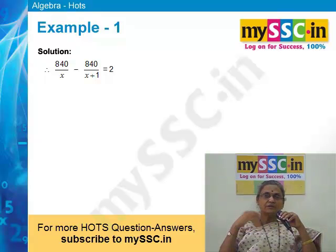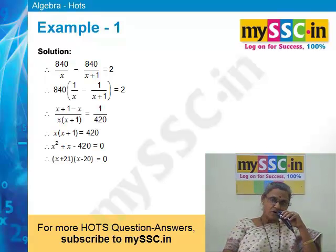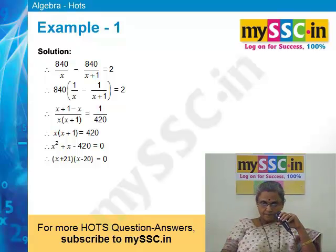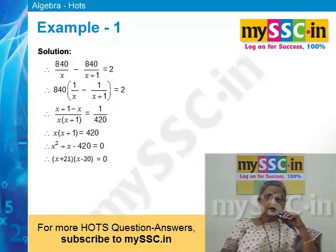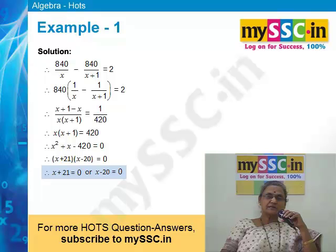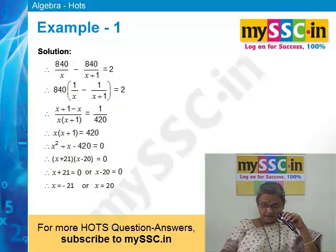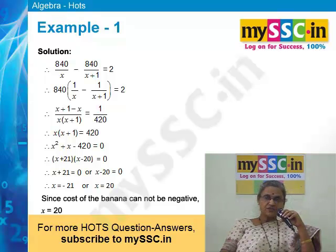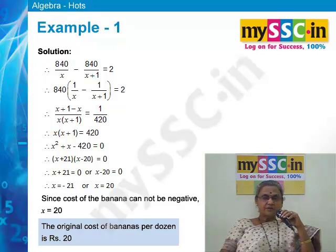After solving this equation you will get the answer for x. This equation is in quadratic form, and after solving you get (x + 21)(x − 20) = 0. Using the basic concept of quadratic equations — if the product of two numbers is 0, then either of them is 0 — we get x + 21 = 0 or x − 20 = 0, giving x = −21 or x = 20. But cost is never negative, so we do not consider x = −21. Therefore x = 20, and the original cost of bananas is rupees 20 per dozen.